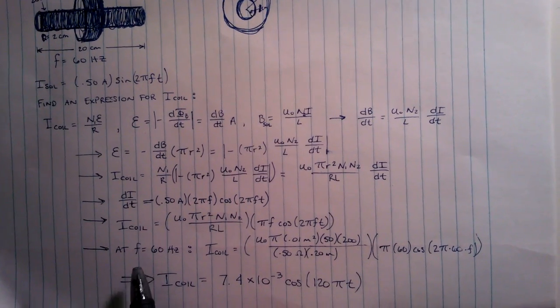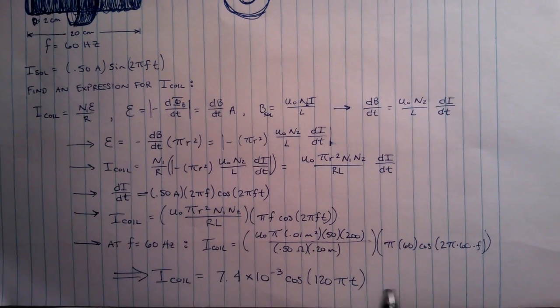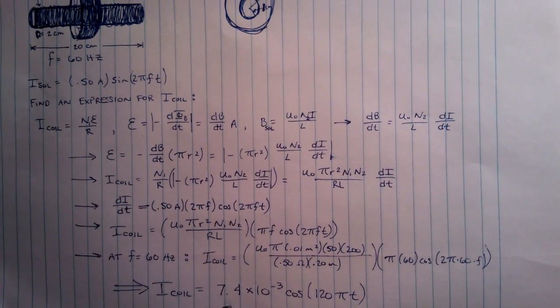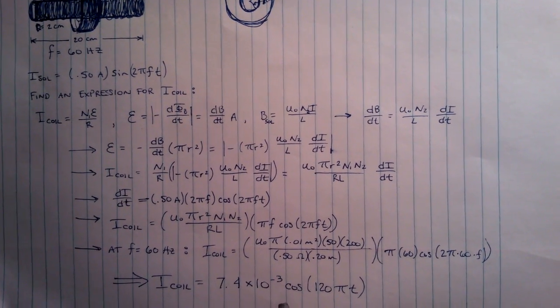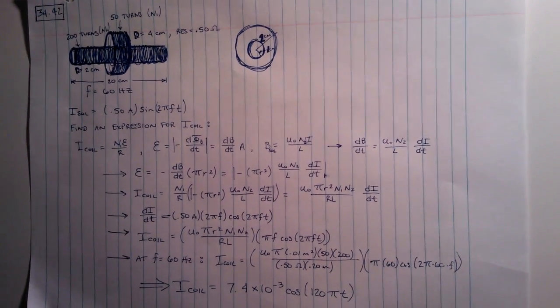And then you need to find the expression for a frequency of 60 Hertz. So you plug in all your numbers here and you come out with this expression down here which is 7.4 times 10 to the negative 3 cosine of 120πT. That is number 42.